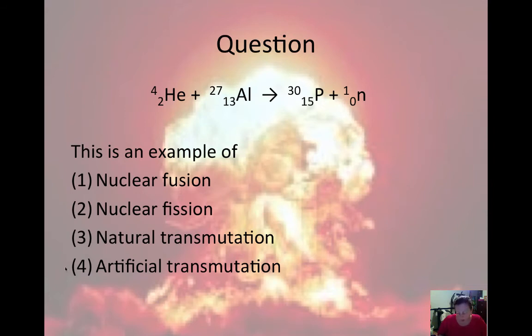So our first example shows an alpha particle plus an aluminum-27 resulting in phosphorus-30 plus a neutron. So here we have an example of an artificial transmutation, where we have two particles on the left, on the reactant side. So this alpha particle is being artificially collided with this aluminum in order to produce these two products.